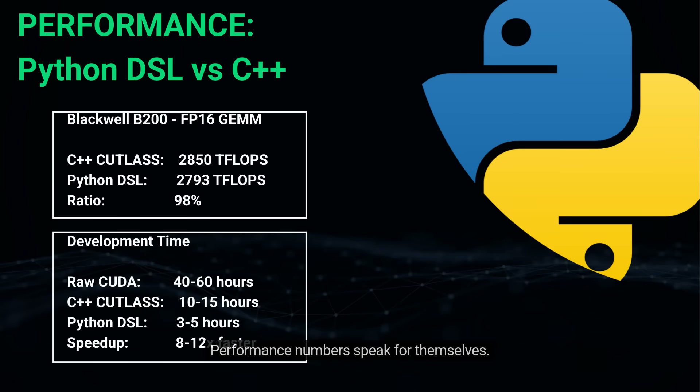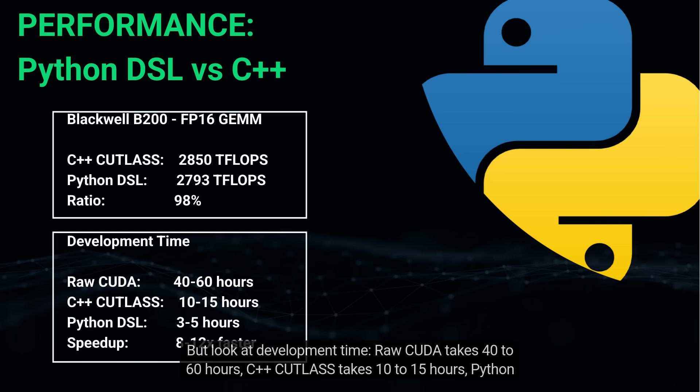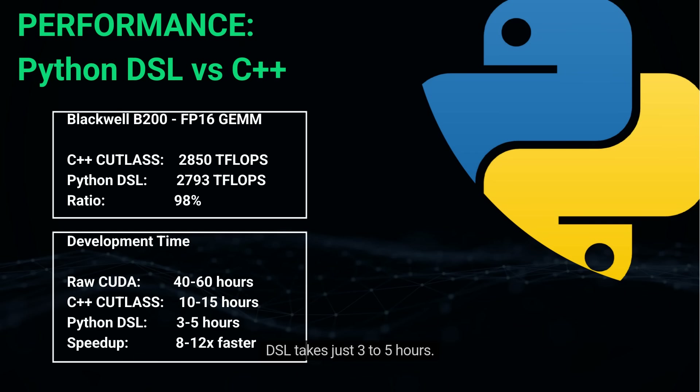Performance numbers speak for themselves. On Blackwell B200, the Python DSL achieves 98% of handwritten C++ Cutlass performance for FP16 matrix multiplication.